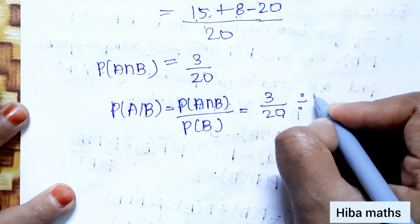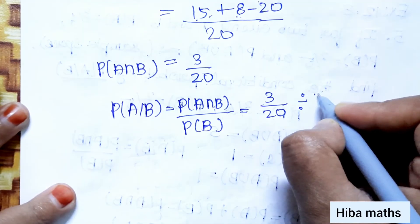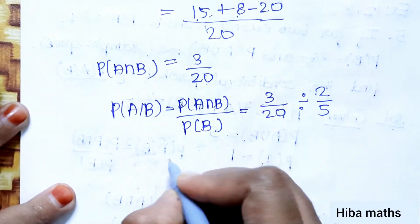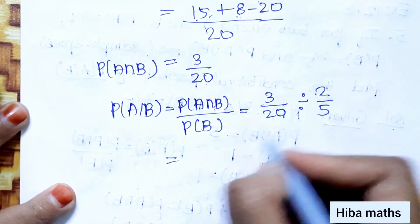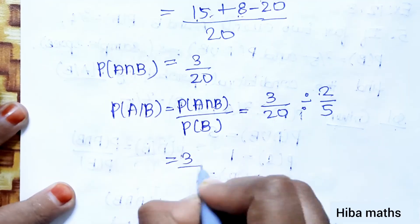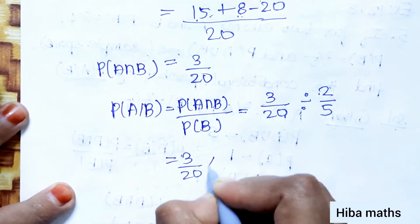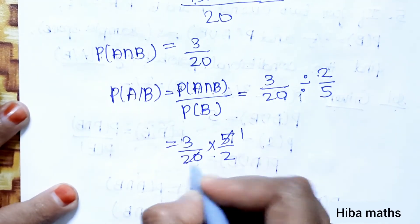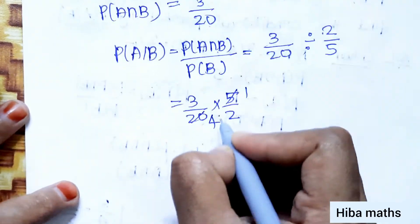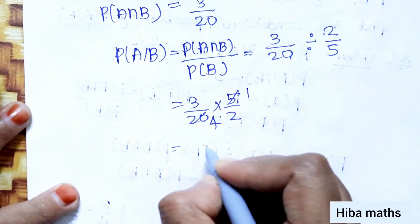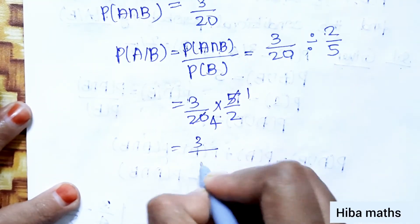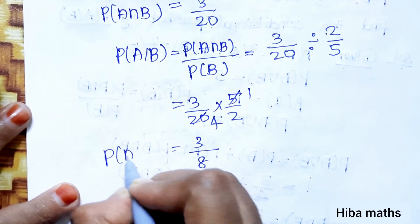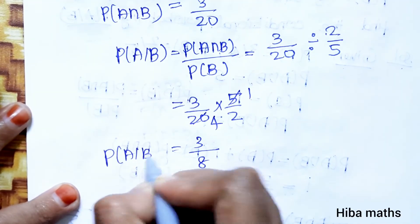Dividing: (3/20) ÷ (2/5) = (3/20) × (5/2) = 15/40 = 3/8. Therefore P(A|B) = 3/8.